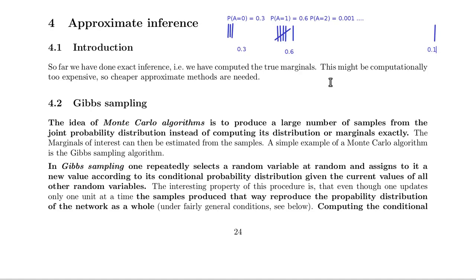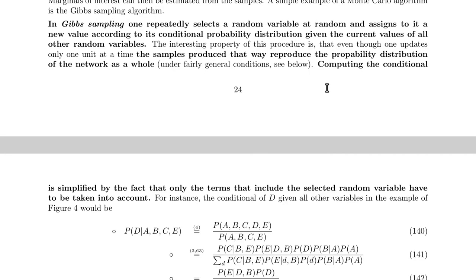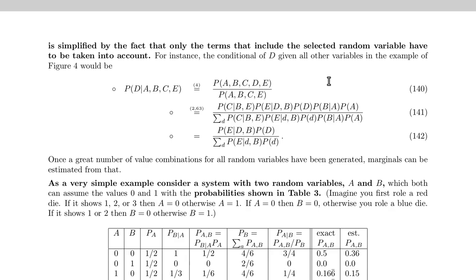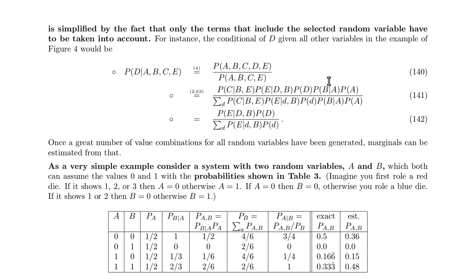Now in Bayesian networks, we have several variables to sample over. Like here a network with 5 different units. So let's draw a little network here, maybe A, C, D, E.